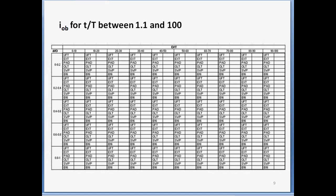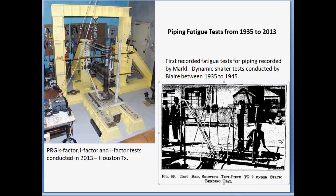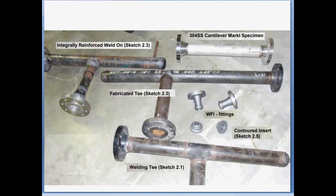Since we're talking about test data, let's take a quick look at how Paulin Research Group validates solutions in areas where there's not a lot of fatigue test data. The rig on the left is the type of test machine that R.W. Schneider and Markle ran. It's also the machine that Dr. Kahn ran for WRC 329 in Oklahoma in the early 1980s. The rig on the right shows a picture of the first recorded fatigue tests for piping. These tests were run by Blair in England between 1935 and 1945. The machine on the left is in the PRG facility and is functioning in Houston today.